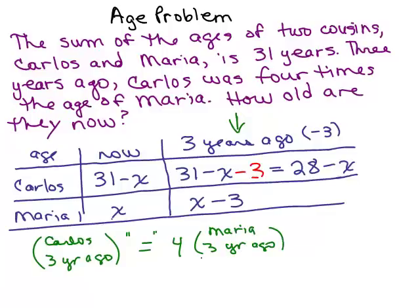Okay? And to figure out what to plug in you have to look at this column, how old they were three years ago, not how old they are right now. So what was Carlos's age three years ago? This is 28 minus X. Carlos three years ago, 28 minus X. So we've got 28 minus X is four times, and what was Maria's age three years ago? So we look right here, X minus 3. So that's the equation.